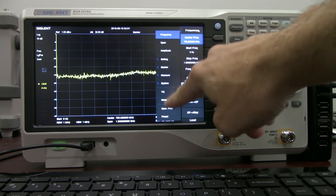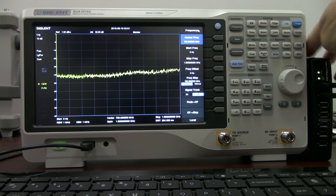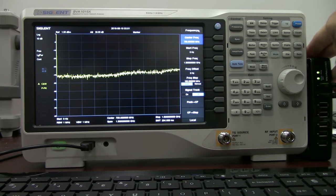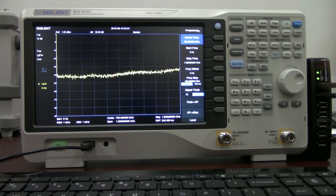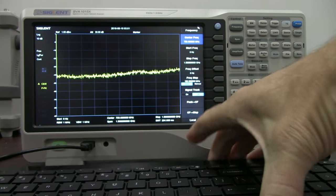We also have control over all of the different settings of the instrument. And you'll see over here I've got a USB hub. That USB hub is connected to the USB input here. And we've got a USB mouse as well as a USB keyboard.